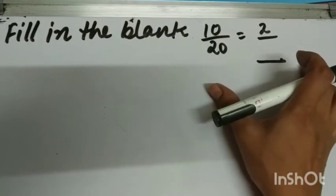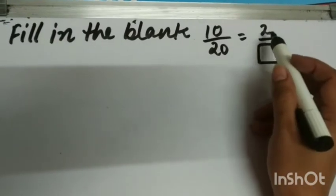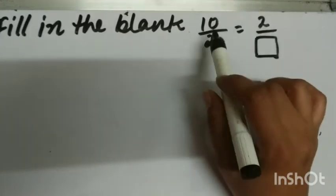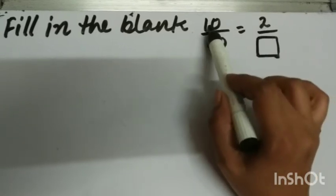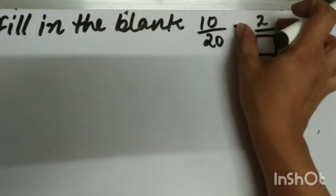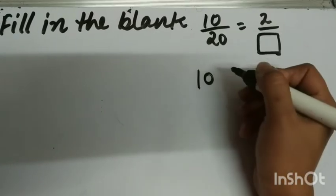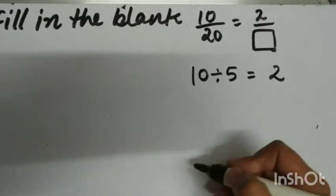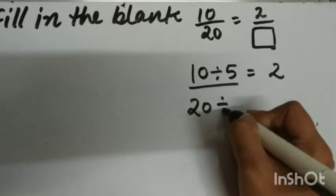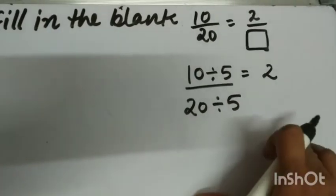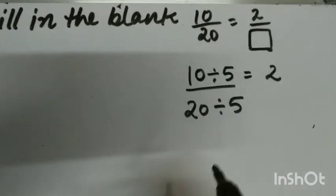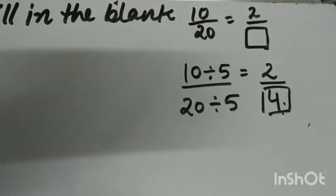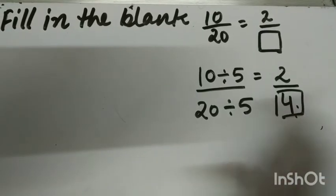If the question comes in this form — ten upon twenty is equal to two upon dash — the equal sign tells us these are equivalent fractions. The greater numerator ten has been converted into the smaller numerator two, so we divide. If I divide ten by five, I get two. Since these are equivalent fractions, I divide the denominator twenty by five as well, giving four. So in the blank we fill four. This is how we find equivalent fractions through division.